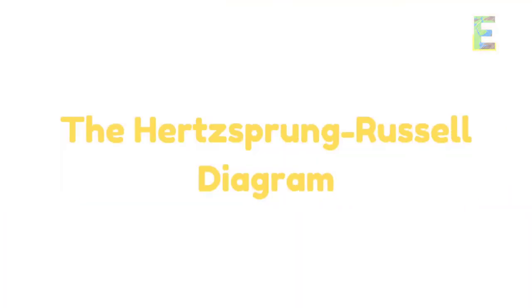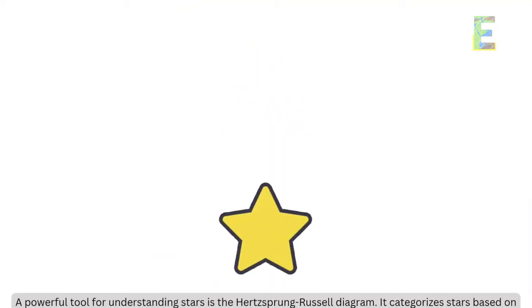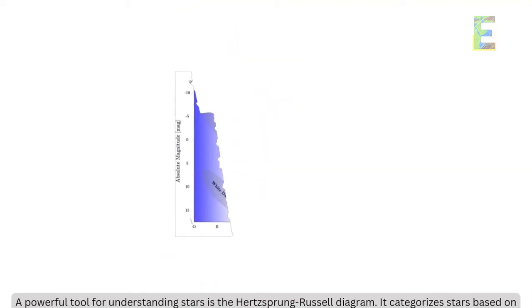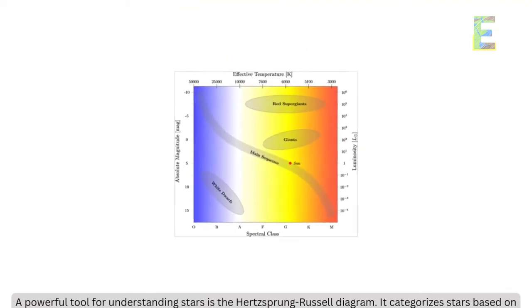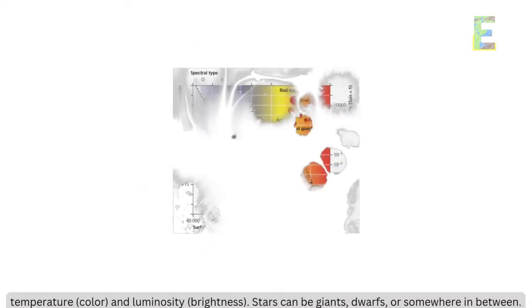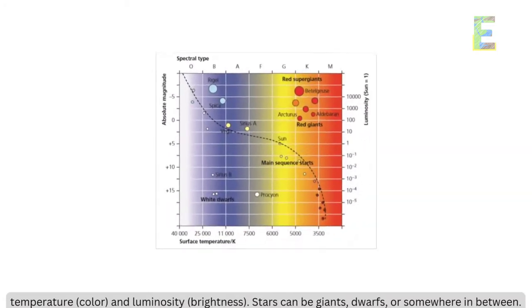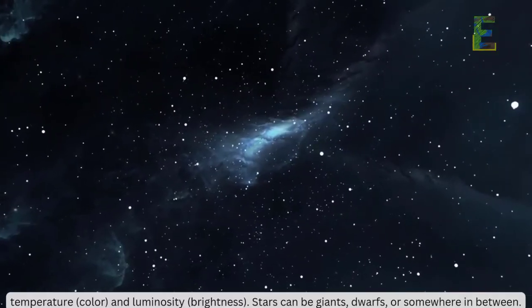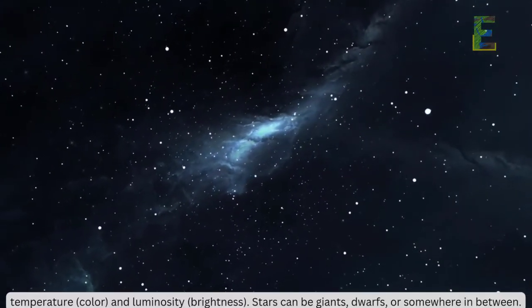The Hertzsprung-Russell diagram, a powerful tool for understanding stars, categorizes stars based on temperature, color, and luminosity or brightness. Stars can be giants, dwarfs, or somewhere in between.